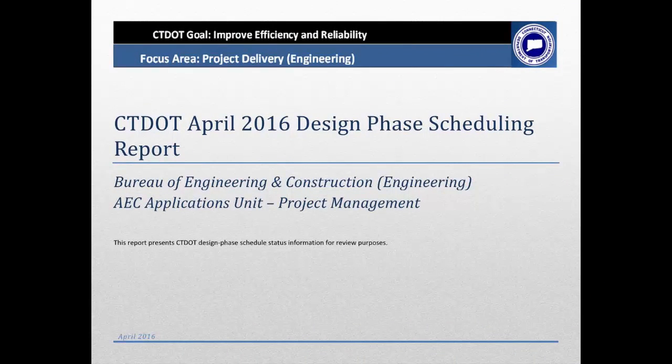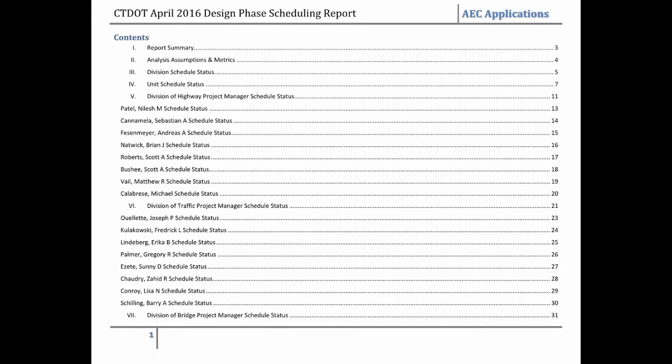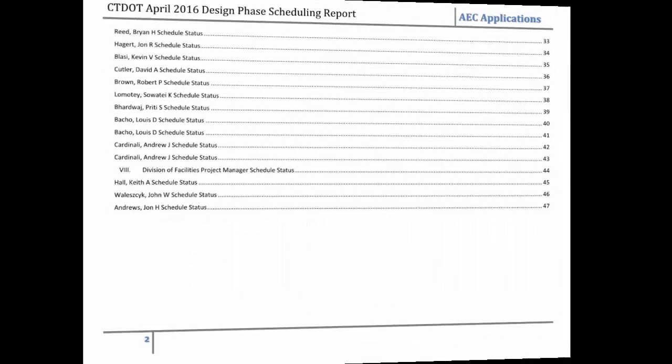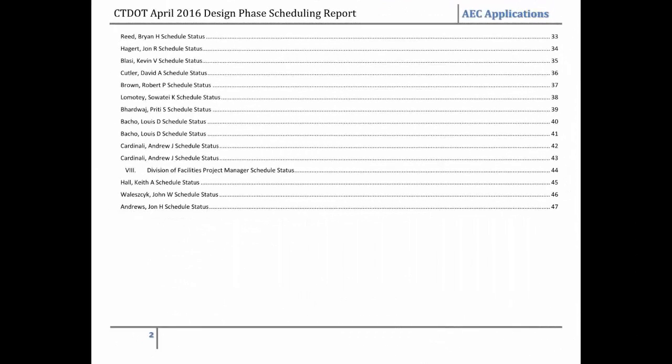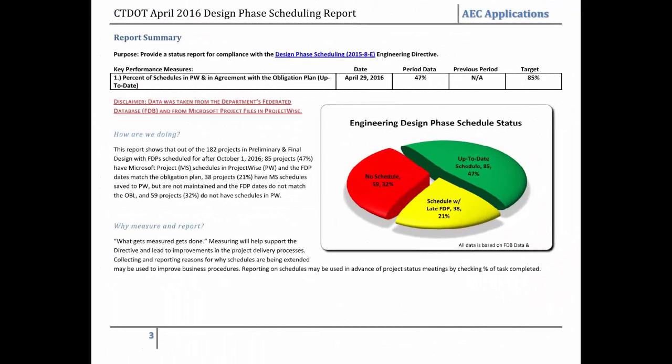All design schedules will be audited on a monthly basis. The audit determines whether or not the schedule is on time, if it's up to date, and is satisfying all the directive requirements. The regular maintenance required to satisfy the directive includes actively recording task progress. For example, if a task is shown as incomplete but the current date is past the schedule finish date, the schedule is not being properly tracked.